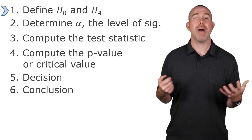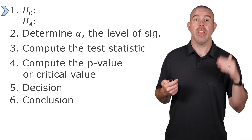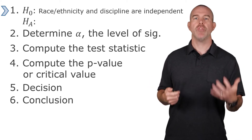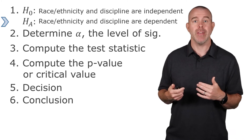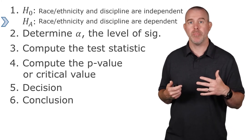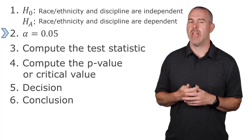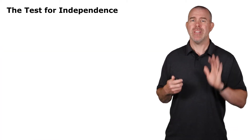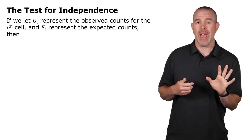So now to our hypothesis test. We want to define a null and alternative hypothesis. The null hypothesis is that the two variables are independent — we assume independence until proven otherwise. Our alternative claim is that they are dependent, that race or ethnicity and the discipline rate are dependent. Our level of significance will use our standard alpha equal to 0.05. But now we need a test statistic, so here is the test for independence.